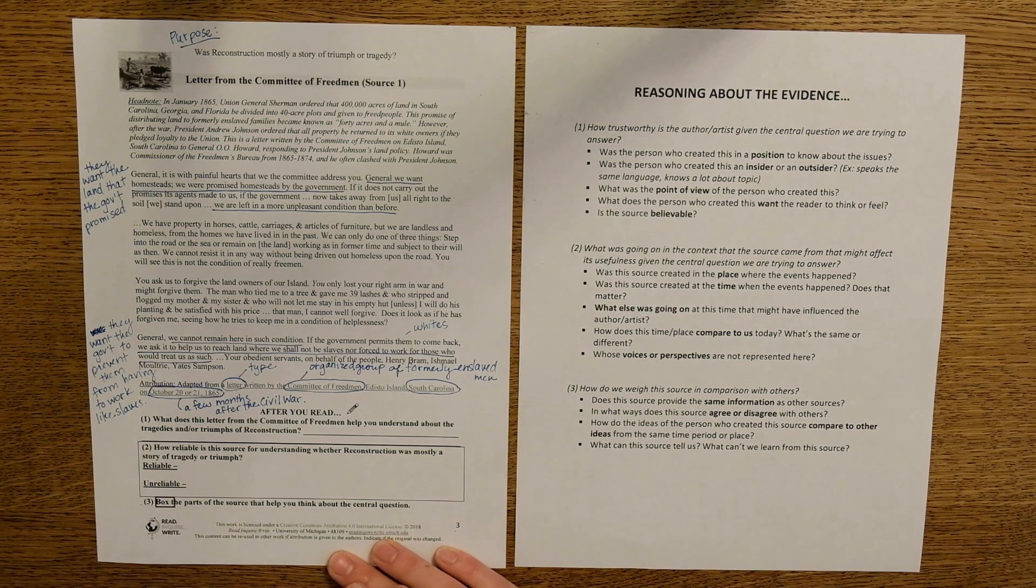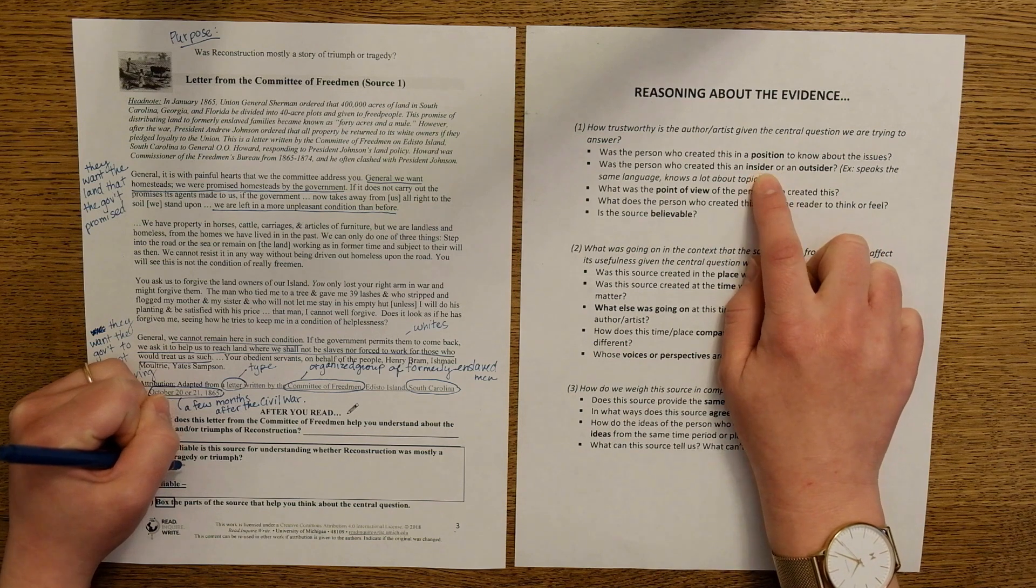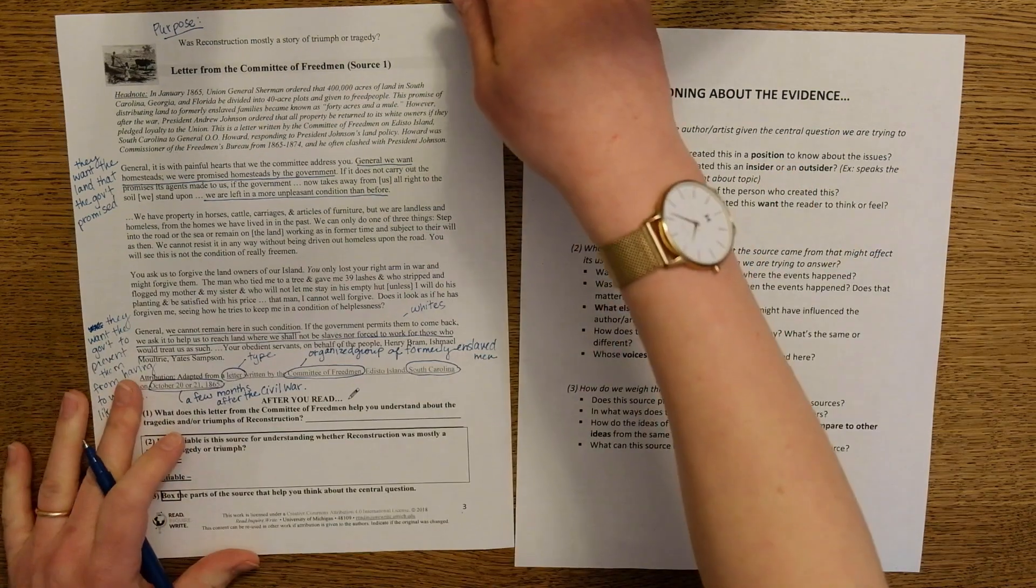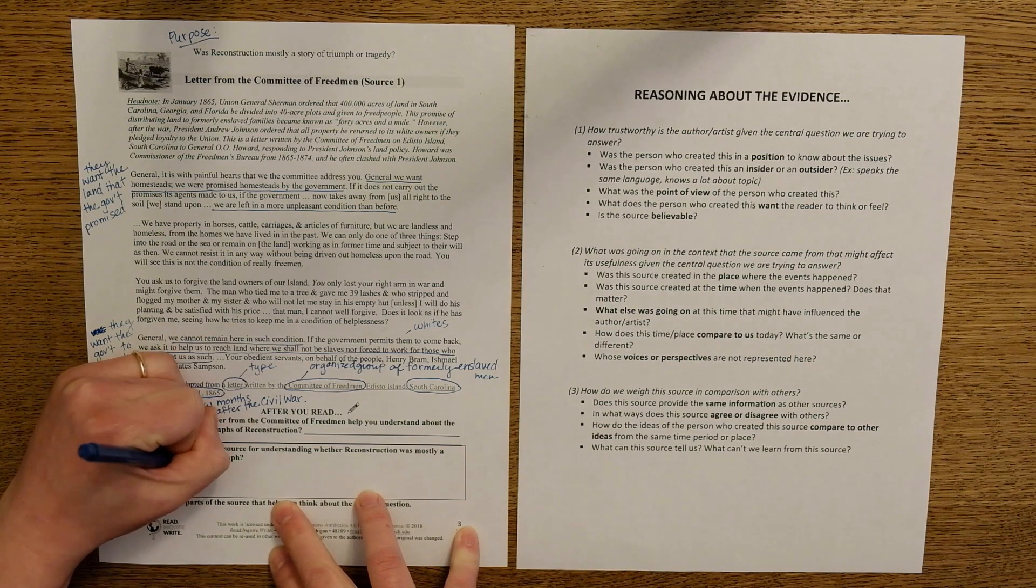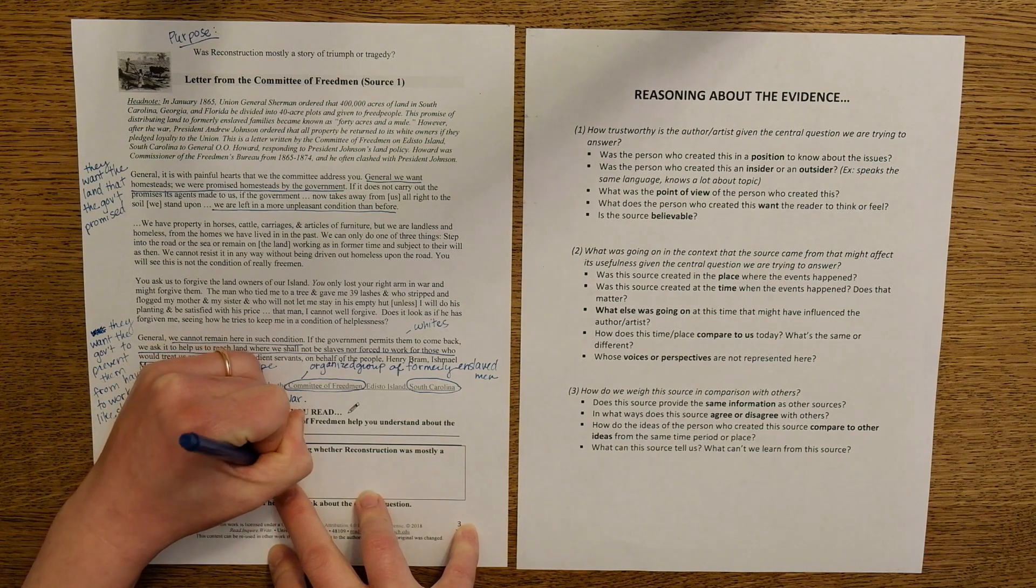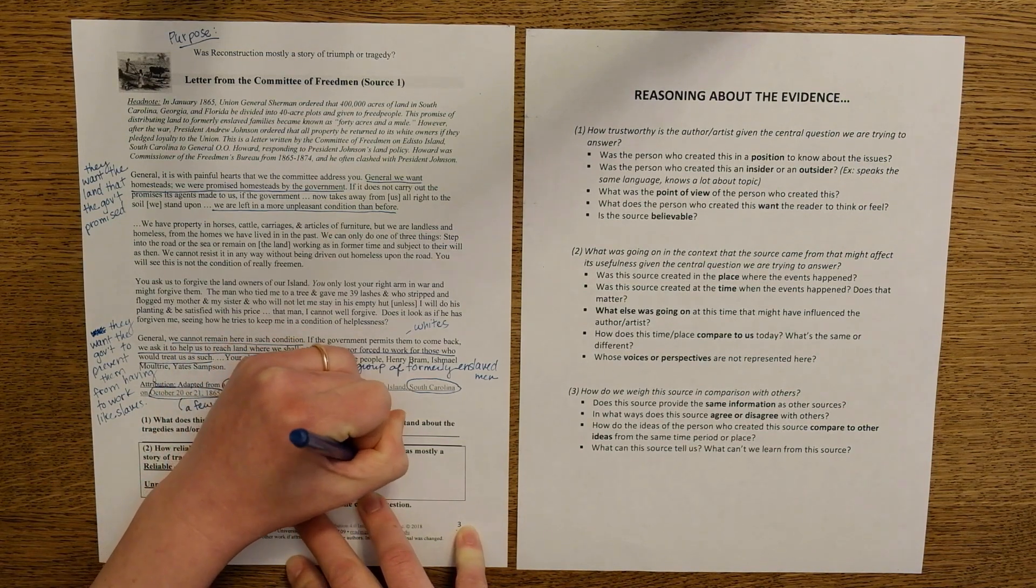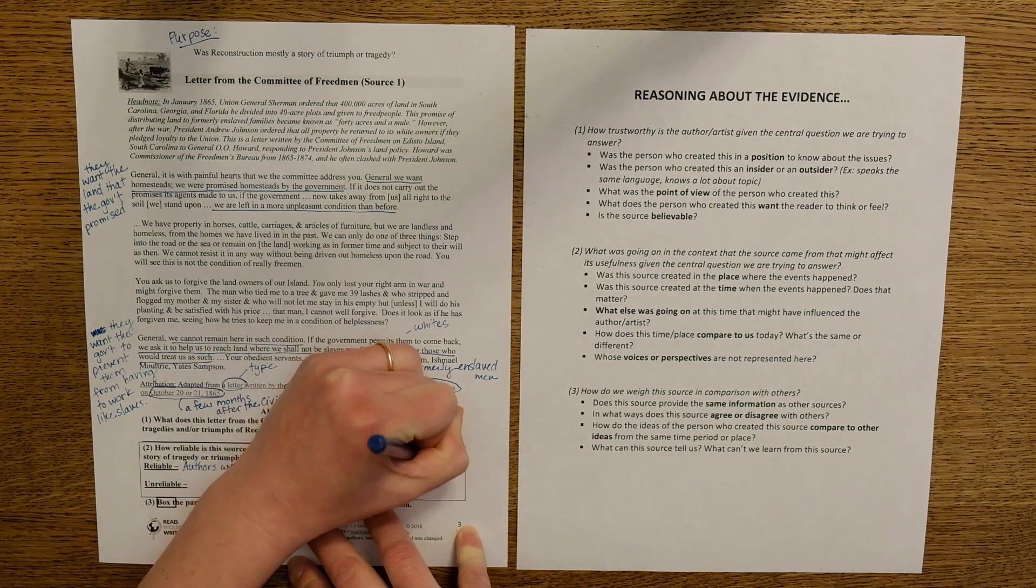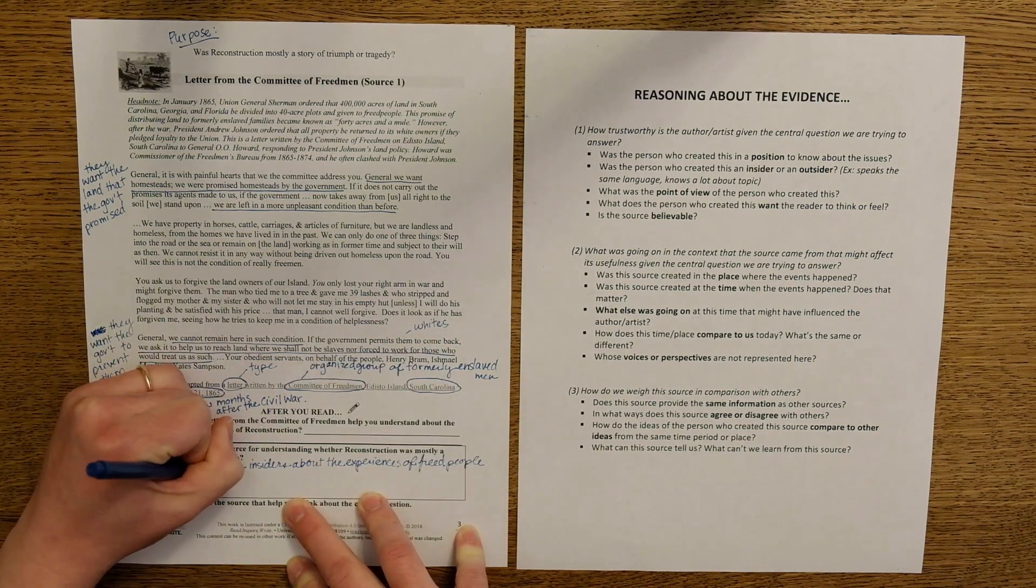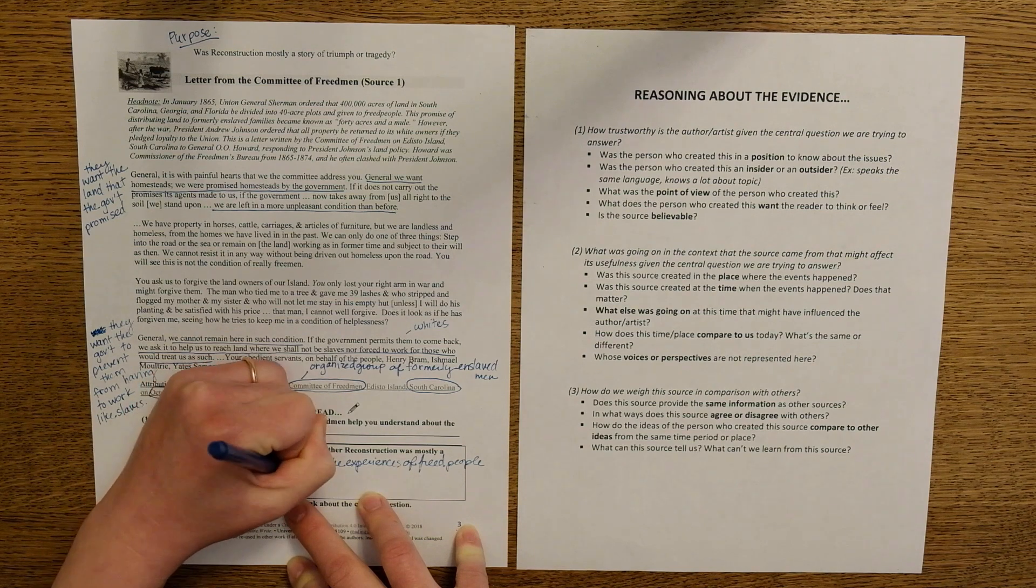We'll start with one reason the source is reliable is because of the people who created it. So the Committee of Freedmen were insiders about the experience of freed people during Reconstruction. And they are in a position to know about the issues because they experienced it firsthand. So I'm going to say authors were insiders about the experiences of freed people during Reconstruction. You could also say that they experienced this firsthand, that they were there.